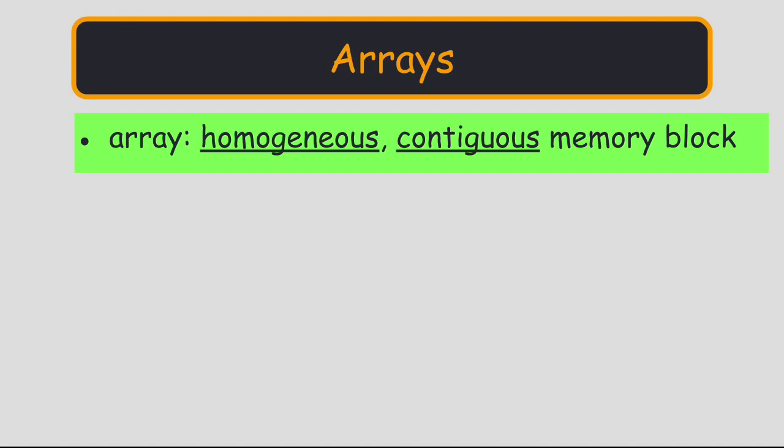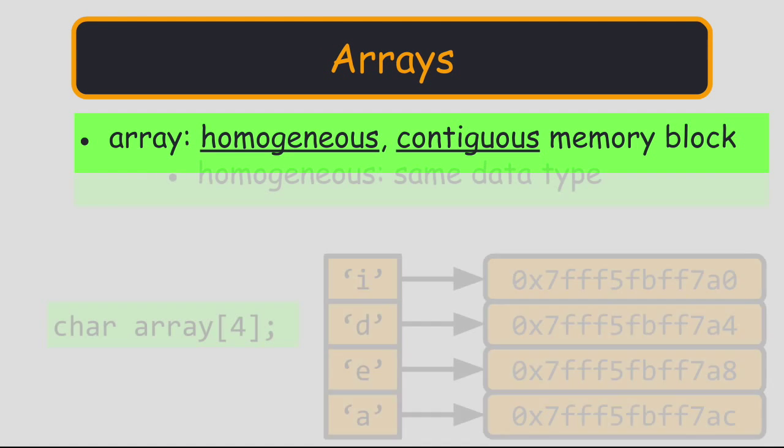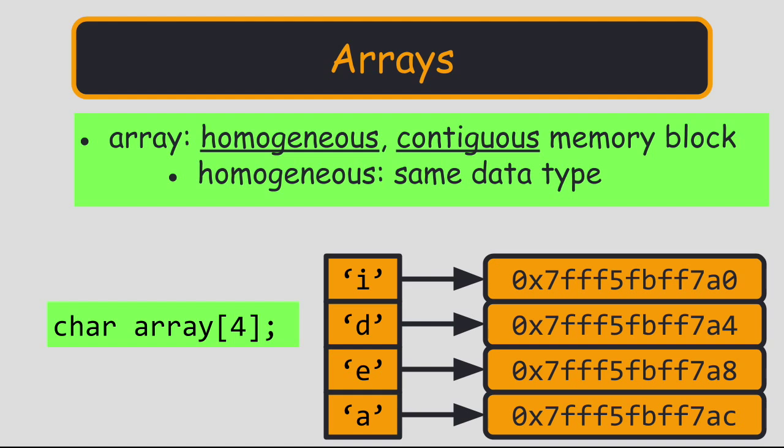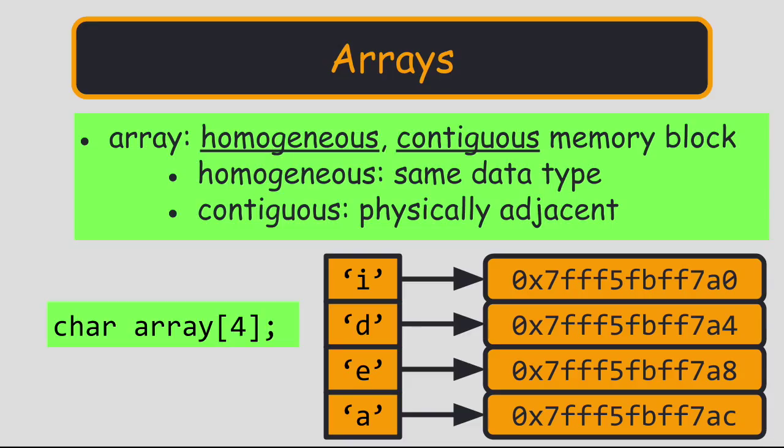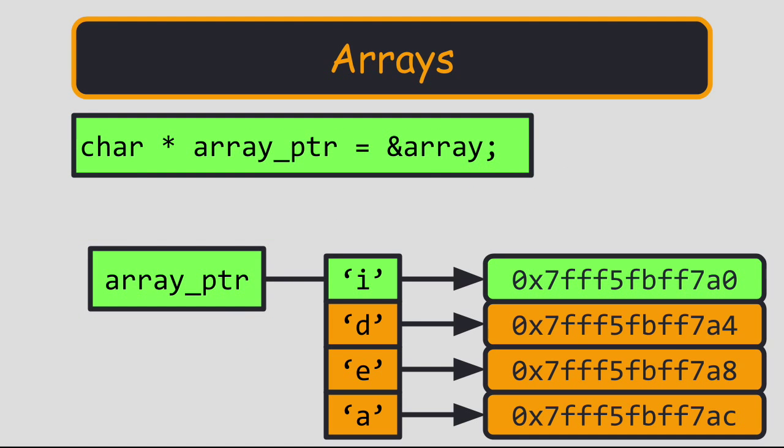An array is a homogenous and contiguous block of memory. By homogenous, I mean that all elements of the array are the same data type. By contiguous, I mean that the elements are physically located right next to each other in memory. If we return the address of an array, we will get the address of the first element.